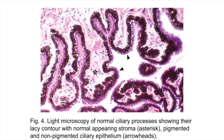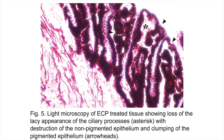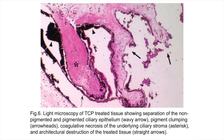Histologically, I also wanted to show some light microscopy. This is what normal ciliary processes look like; the arrowheads are pointing towards the tips. Compare that to post-ECP, where again you see blunting of the tips of the ciliary processes. And then looking at transcleral CPC, where you see a great deal of destruction, loss of architecture — the lacy nature of the ciliary processes is lost, and you can see a separation of the epithelium, both pigmented and non-pigmented, from the stroma of the ciliary processes.